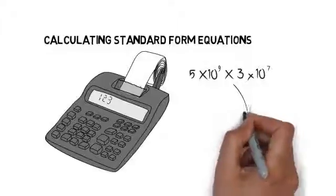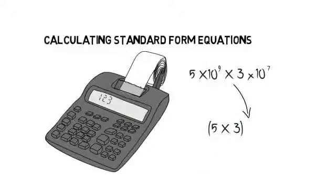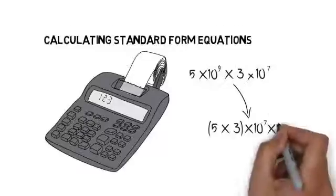The first thing you must do is collect the like terms. Collect the 5 and the 3 so that you get 5 times 3 in this bracket, and times by 10 to the power of 7 times 10 to the power of 9.